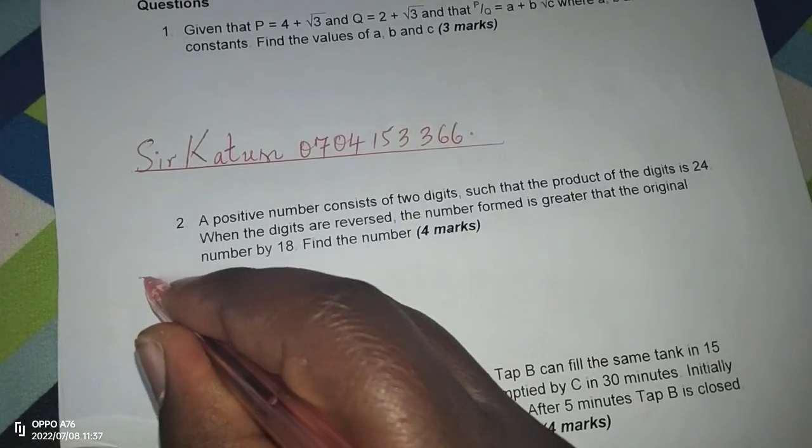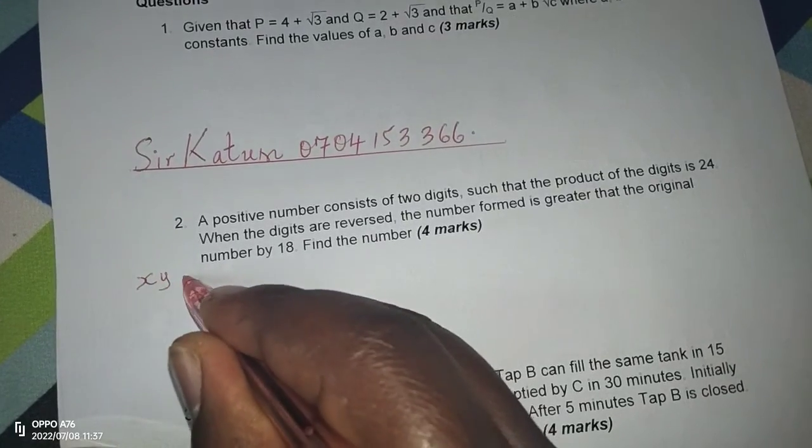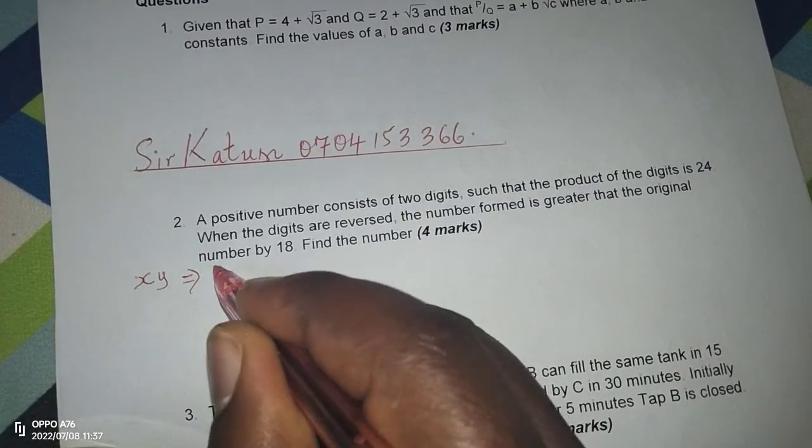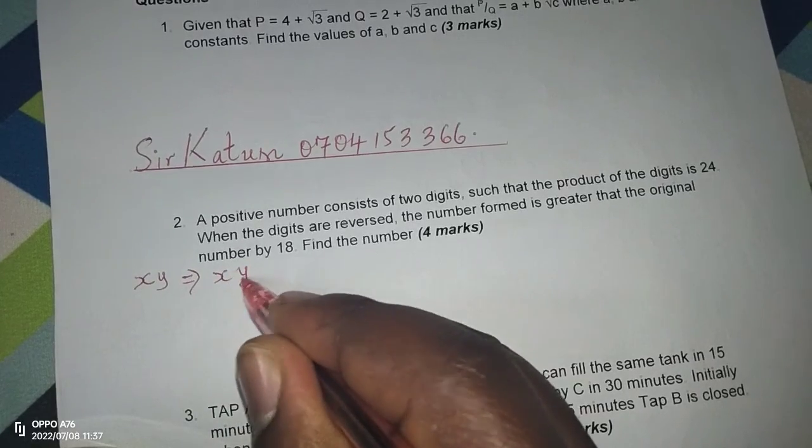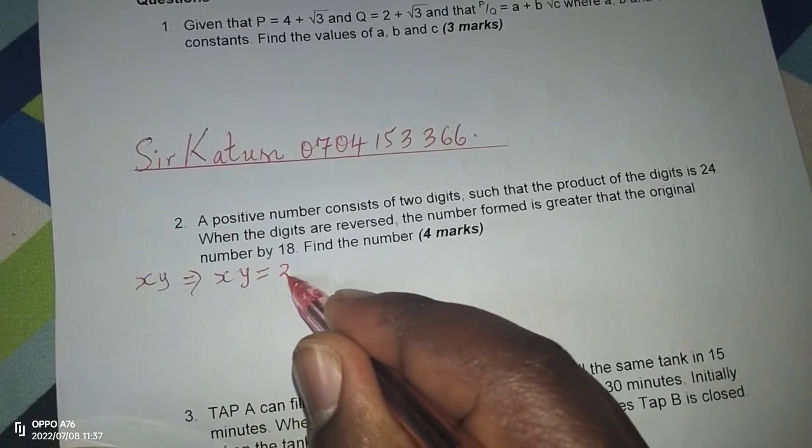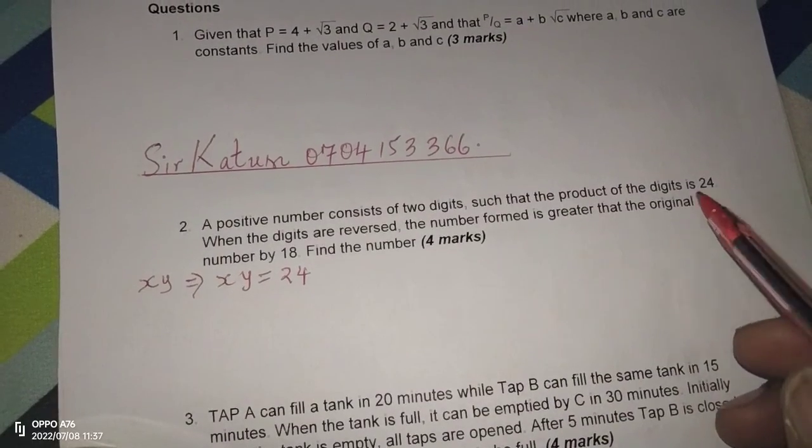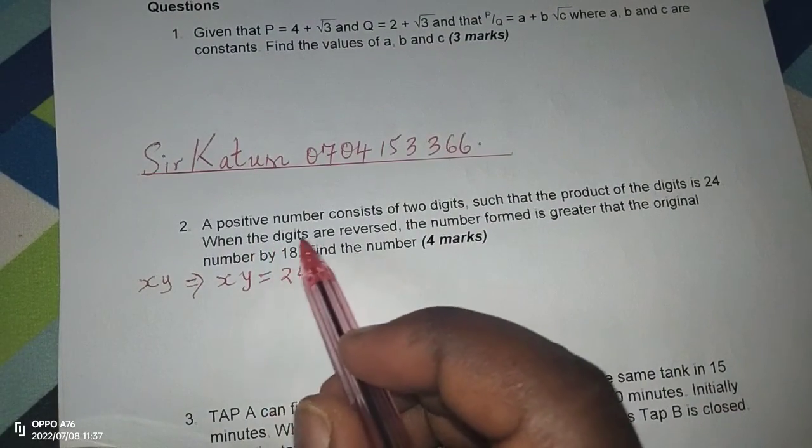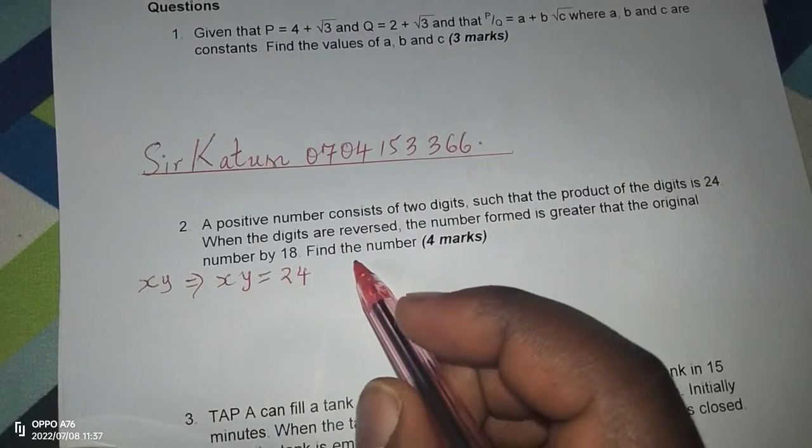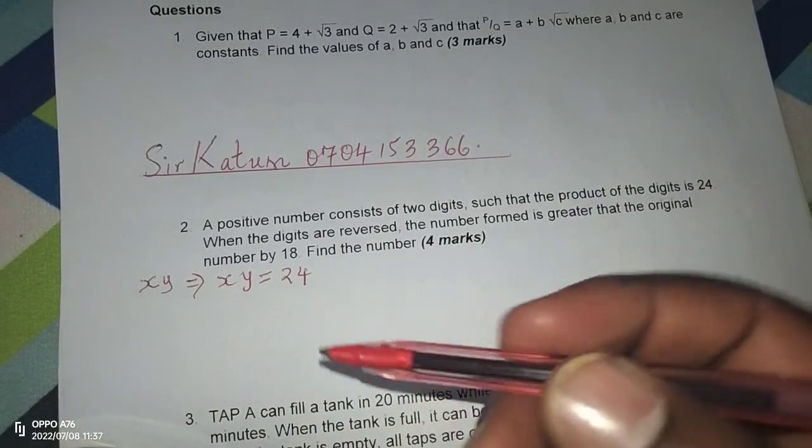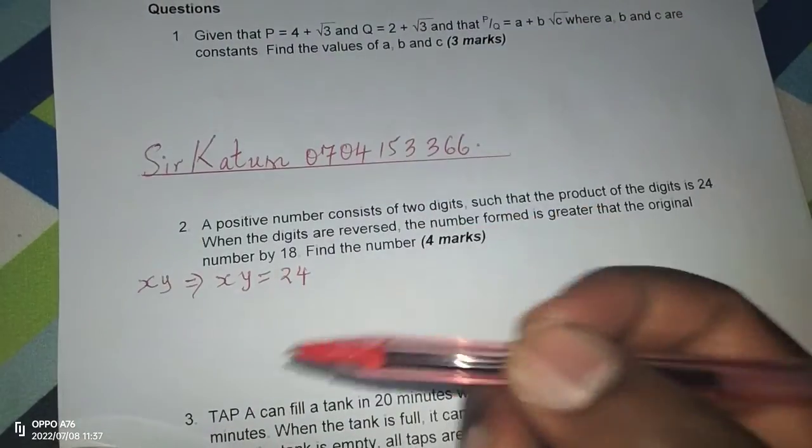We can let the number be XY, and if the number is XY, then it means X multiplied by Y should give us 24 according to the first statement. We are told when the digits are reversed, which means now the number changes from being XY to YX.